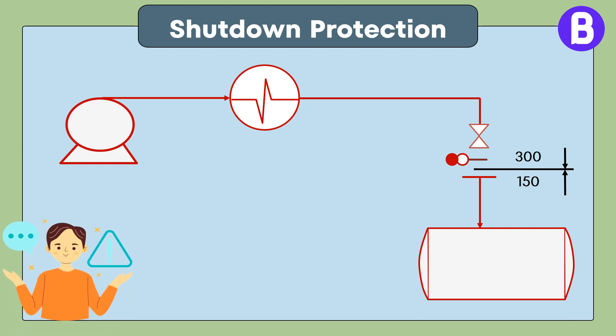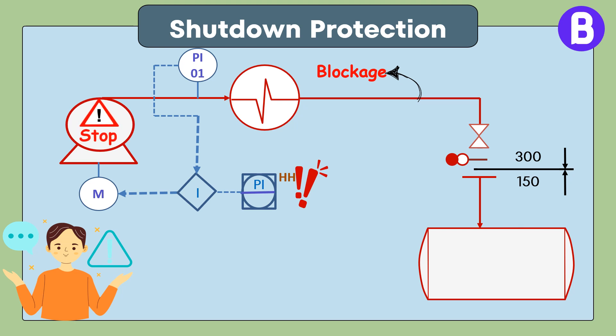What shall we do? The first proposed solution was to add a safety interlock system. When some blockage occurs and the pressure at the discharge reads a very high pressure, this shall trigger a signal from existing emergency shutdown system to stop the pump. However, this solution faced a significant hurdle.